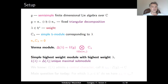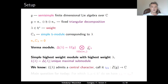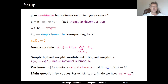Each Verma module has a unique maximal submodule, and we denote by L(λ) the corresponding unique simple quotient. This is the unique simple highest weight module with highest weight lambda. Being a simple module, we know from Schur's lemma that it admits a central character — each element of the center of the universal enveloping algebra acts on L(λ) via a scalar prescribed by the algebra homomorphism χ_λ from the center of the universal enveloping algebra to the complex numbers. The main question for today is: for which weights lambda and mu are the corresponding central characters χ_λ and χ_μ equal?